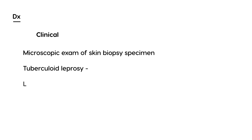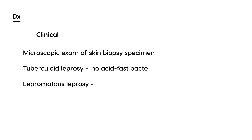There are two types of leprosy: tuberculoid leprosy and lepromatous leprosy. When you do the microscopic exam, tuberculoid leprosy will show no acid-fast bacteria. In lepromatous leprosy, you will see numerous acid-fast bacteria — referring to the Mycobacterium species.